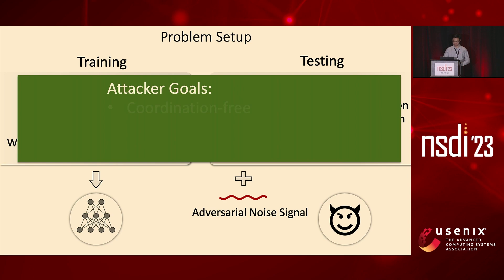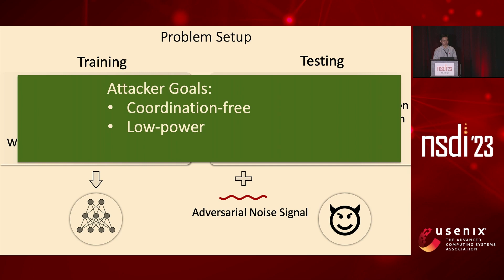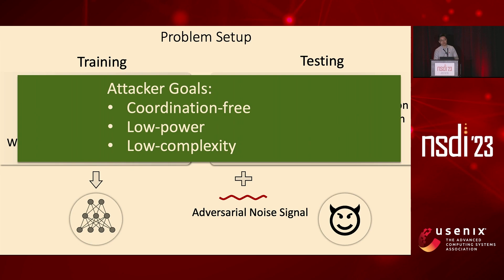Our attacker has the following goals. First, we want it to be coordination-free, meaning we do not want our attacker to coordinate with either base stations or the client. Second, we want our attacker to transmit at very low power such that it won't get detected easily. Note that this fundamentally differs from a jamming attack, which adopts very high power to jam the entire spectrum. Finally, our attack has very low complexity because we want it to be generalizable and universal when it actually gets deployed.